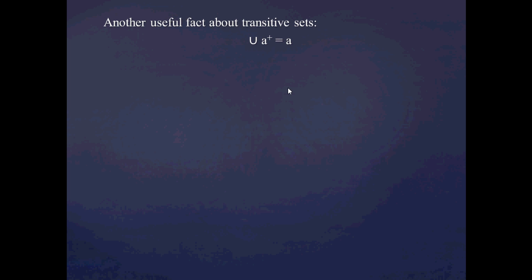Here's another useful fact about transitive sets: if A is transitive, then the union of A+ is equal to A. As an example, we know that all natural numbers are now transitive. So the union of 2+ — which is equal to the union of 3 — should be equal to 2.